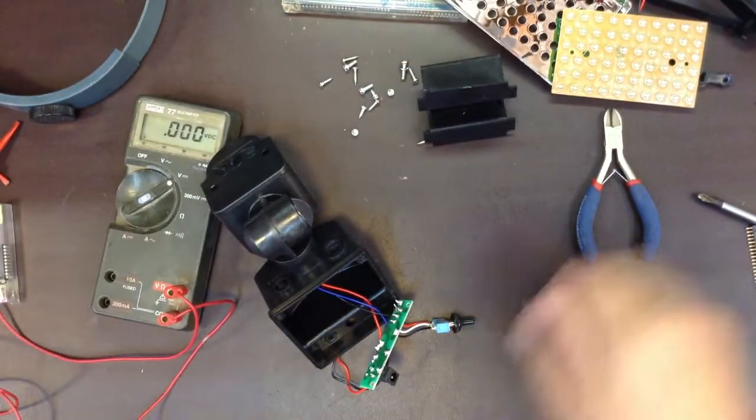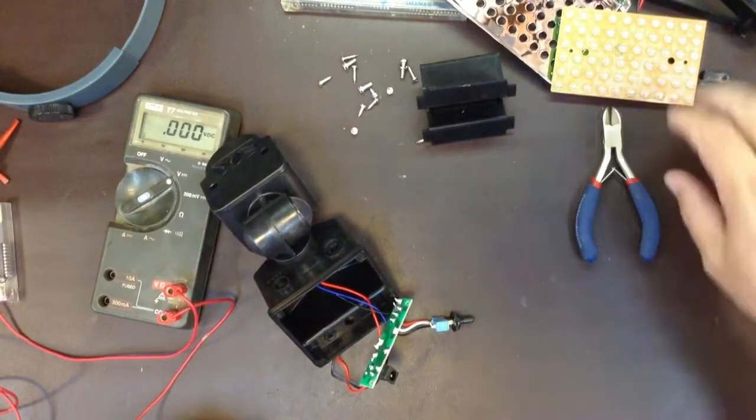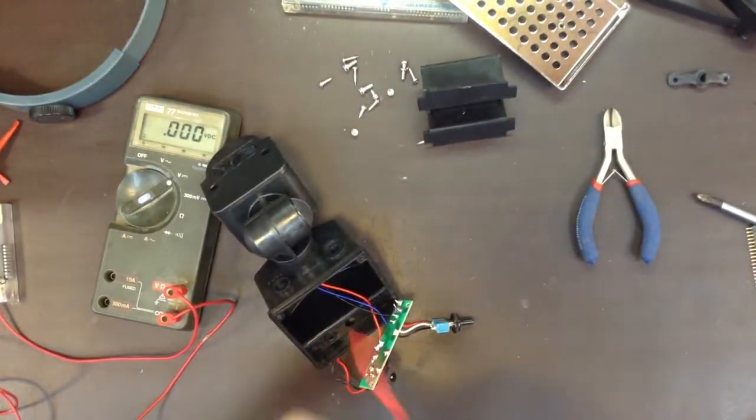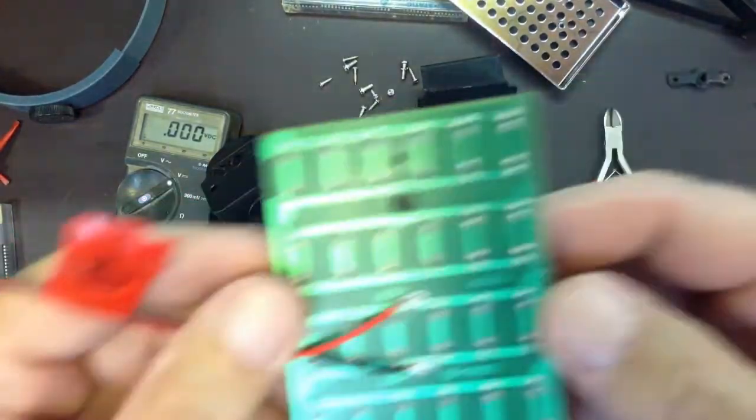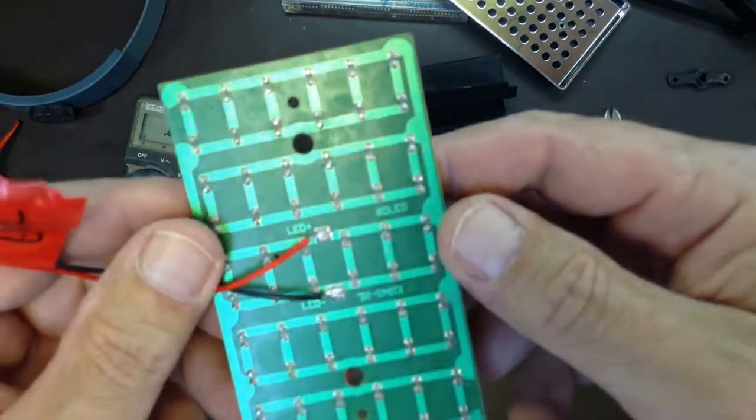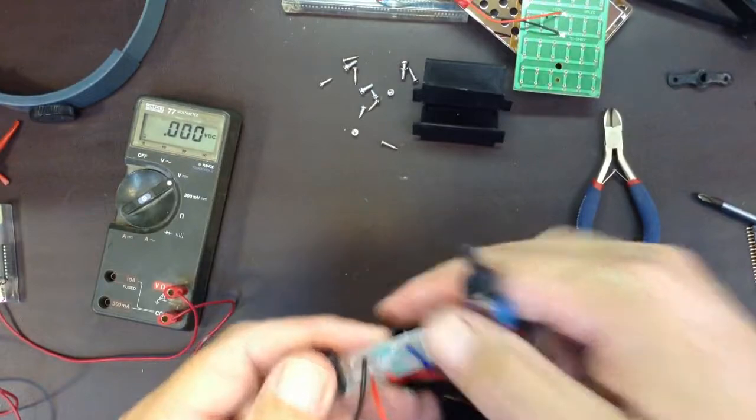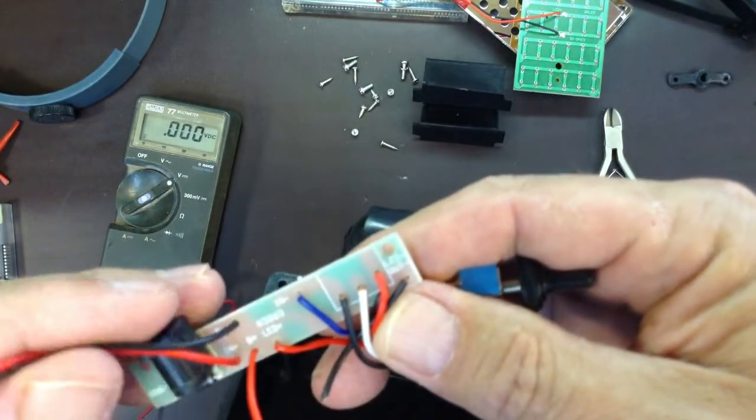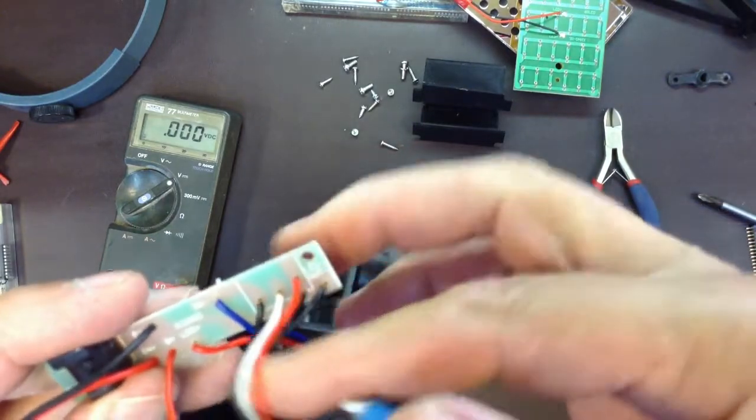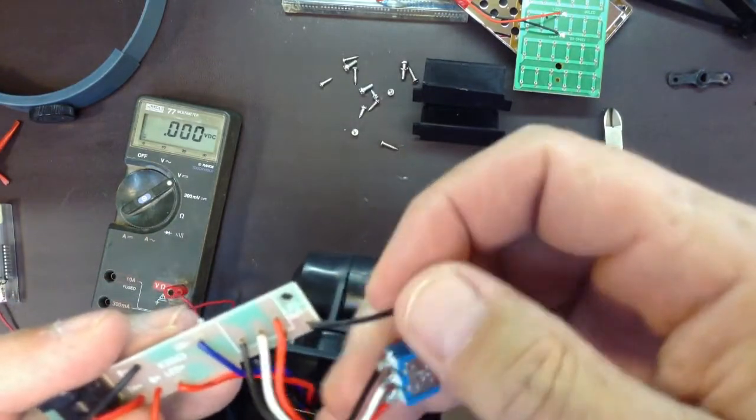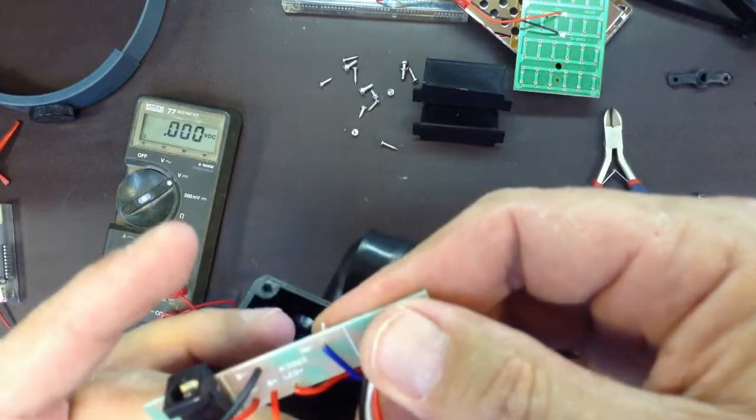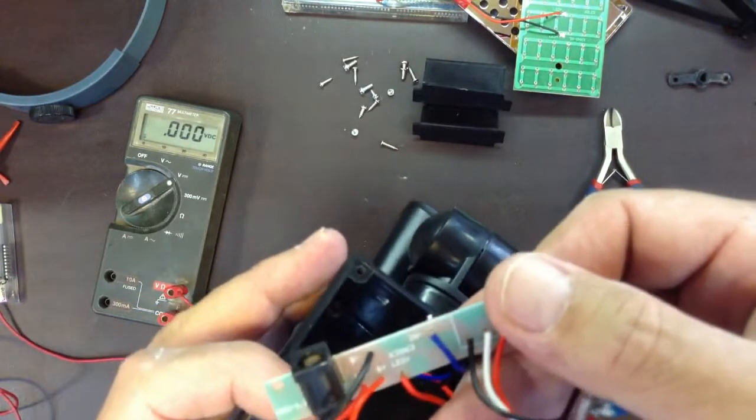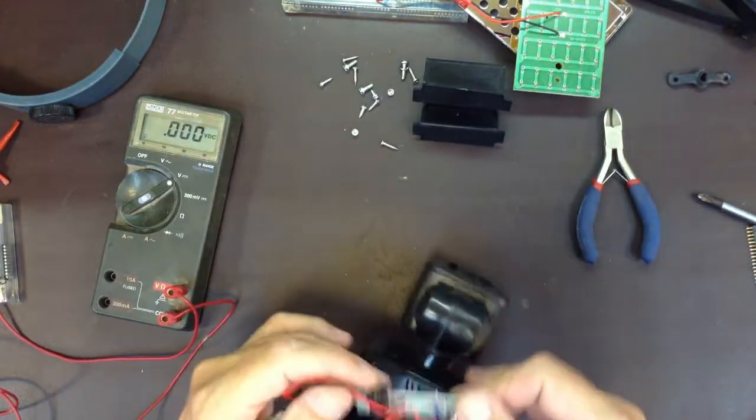Couple more screws. You know, I gotta say for inexpensive Chinese stuff. I'm kind of impressed with how they label their circuit boards. Battery plus. Battery minus. Input minus. LED out. Over on that end. LED positive going on this end. Should make this pretty simple to figure out.